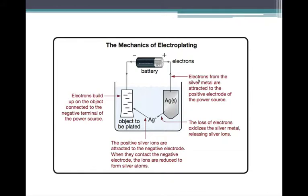So the mechanics of electroplating. Let's have a look here, and we're getting an external energy source of the battery shown here. The electrons build up on the object connected to the negative terminal of the power source. And these electrons are going to be attracting the positive silver ions. And when they contact the negative electrons, the ions are reduced to form silver atoms.